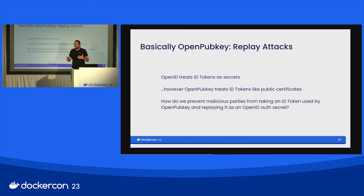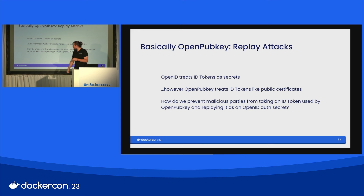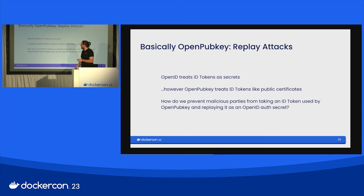Notice that there's a tension here. OpenID is treating these ID tokens as authentication secrets that have to be kept secret and then revealed to authenticate — the name for this pattern is bearer authentication, where you bear a token to authenticate. Whereas OpenPubKey is treating these ID tokens like public certificates. You publish them with a signature on a public registry or anywhere on the internet and use them to verify that an object has been signed by the identity. So these two uses are in tension. What if someone takes an ID token published for OpenPubKey and replays it to an OpenID Connect authentication service that is misconfigured and doesn't check all the fields it should — it just says GitHub or Google says this is Alice. How do we prevent those sorts of attacks?